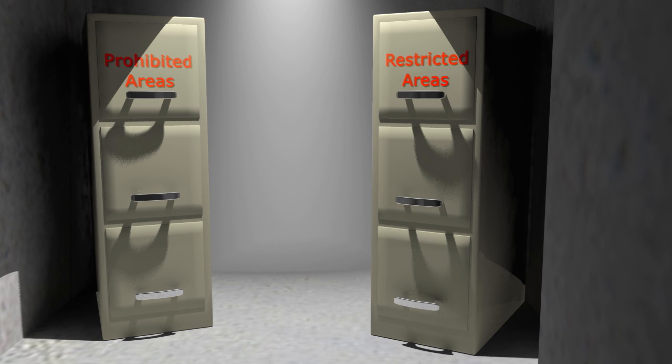Non-regulatory special use airspace consists of warning areas, military operating areas, alert areas, and controlled firing areas.